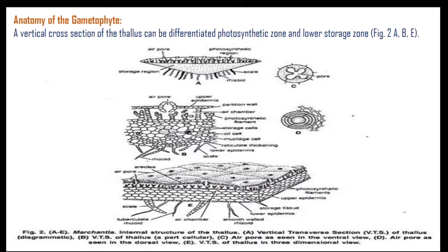Here is the anatomical structure of the gametophyte. A vertical cross section through the thallus can be differentiated into the photosynthetic zone, which is the uppermost zone, and the lower storage zone, made up of parenchyma cells. This diagrammatic representation shows the photosynthetic region and the storage region.